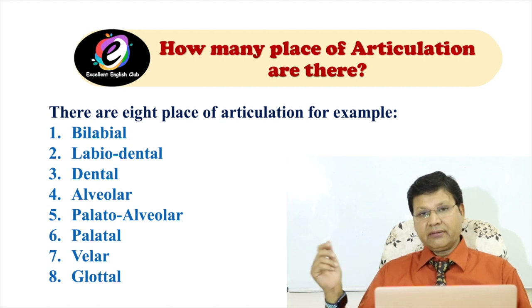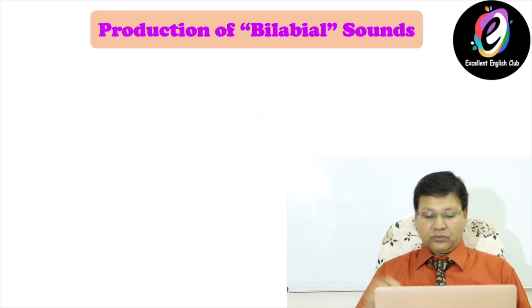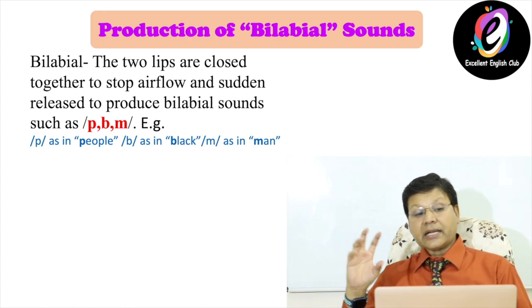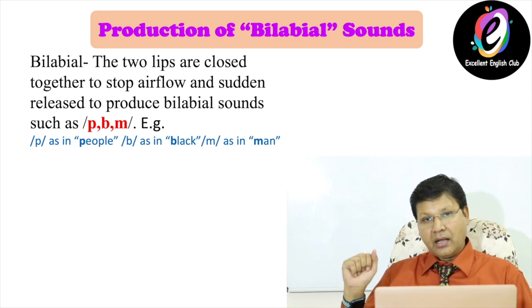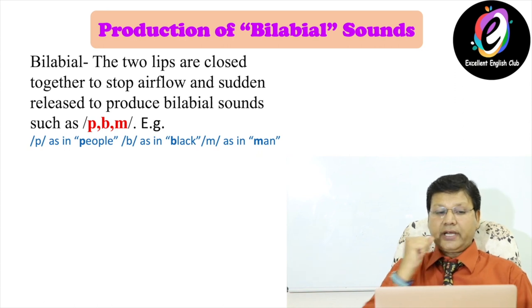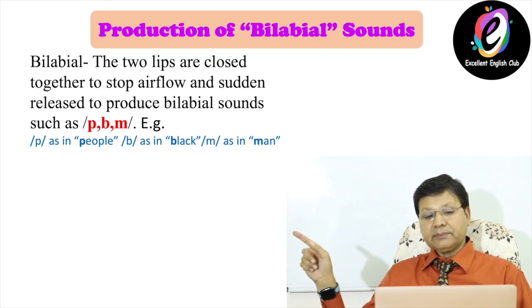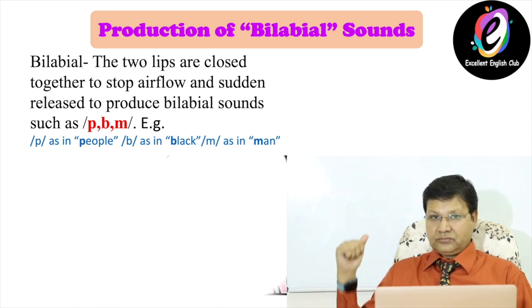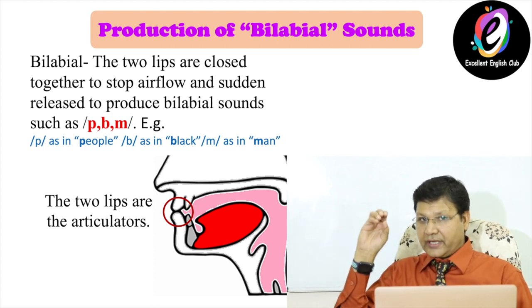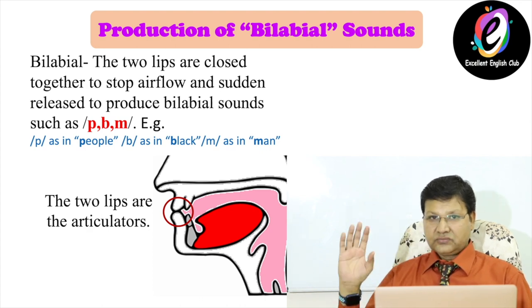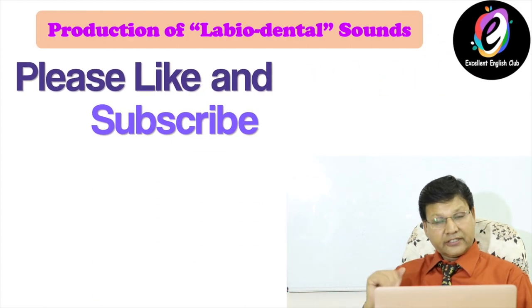Number one: production of bilabial sound. In the production of bilabial sound, the two lips are closed together to stop airflow and then suddenly released to produce bilabial sounds — for example /p/ as in 'people', /b/ as in 'black', and /m/ as in 'man'. In the picture you will see that the two lips are closed together to stop the airflow and release. The articulators here are the upper and lower lips.